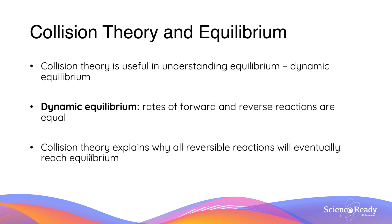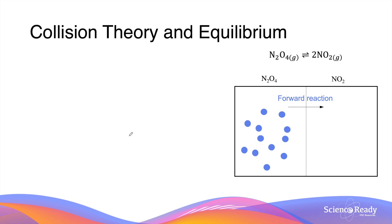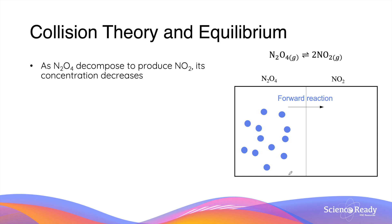One of the main reasons we use collision theory to understand equilibrium is because it explains why all reversible reactions will eventually reach a state of equilibrium, regardless of where they start. To illustrate the concepts we'll discuss, we'll use the reversible equilibrium between dinitrogen tetraoxide (N2O4) and its decomposition product, nitrogen dioxide (NO2).